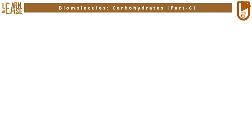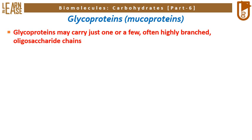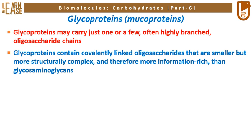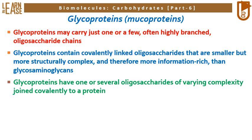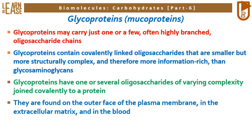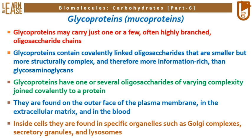The second subtype of glycoconjugates is glycoproteins, also known as mucoproteins. Glycoproteins may carry just one or a few, often highly branched, oligosaccharide chains. They contain covalently linked oligosaccharides that are smaller but more structurally complex, and therefore more information-rich, than glycosaminoglycans. Glycoproteins are found on the outer face of the plasma membrane, in the extracellular matrix, and in the blood, as well as inside cells in specific organelles such as Golgi complexes, secretory granules, and lysosomes.